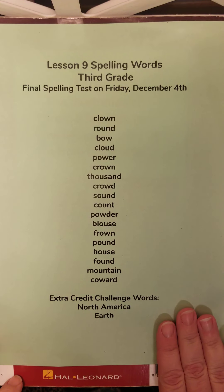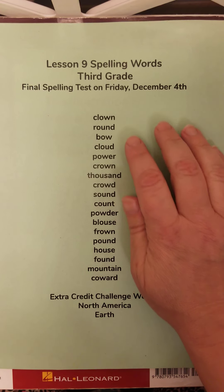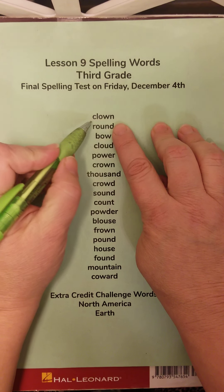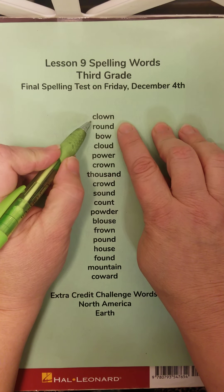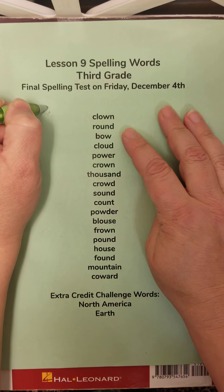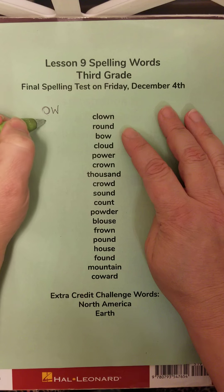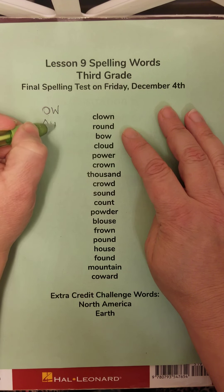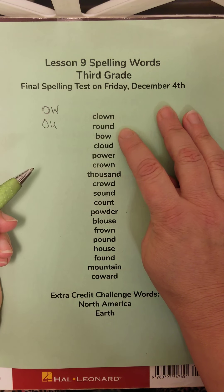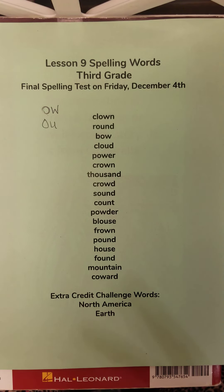The first thing I want to do is talk through our new spelling list and just make sure that you can read them and then talk about the patterns that we see. So this week our spelling patterns are O-W and O-U, and what we're practicing is the O-W and O-U saying 'ow.'